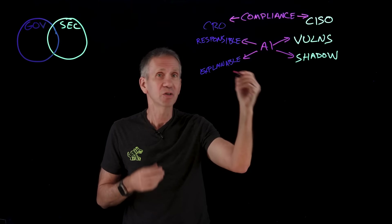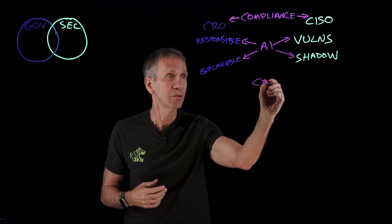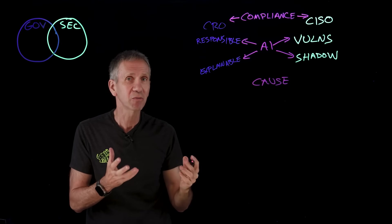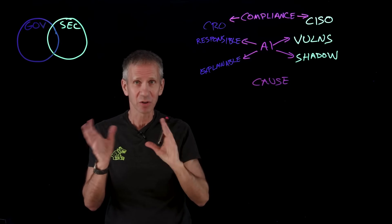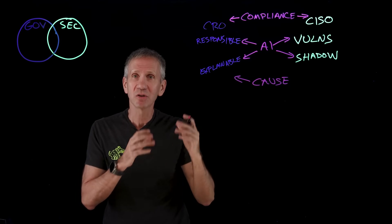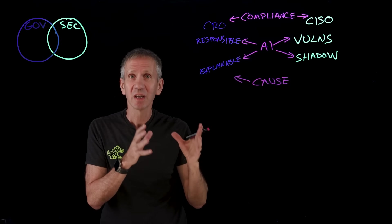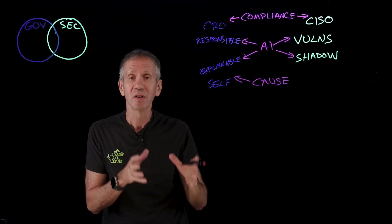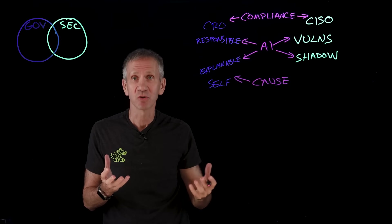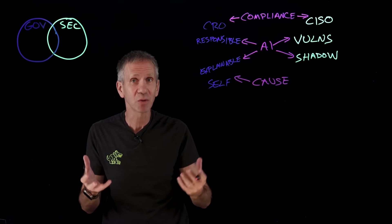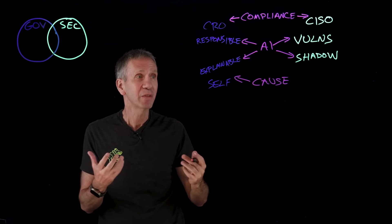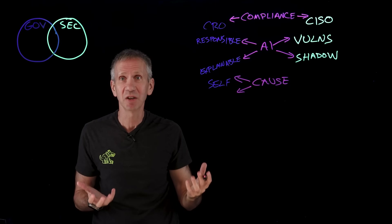In terms of the cause that we're really guarding against in a governance case, it's really self-inflicted wounds. This is where we used a bad model. We pulled it from a bad source. The model wasn't trained properly. The ingredients that went into the cake, as it were, were not the right ones. They weren't pure.